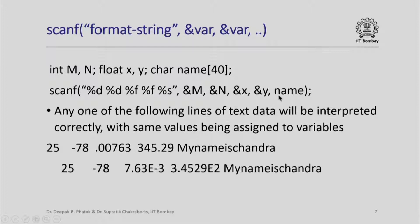It is very important to remember to use &m, &n, &x, and &y whenever we wish to get values for m, n, x, and y. Why have we not used &name? Well, name is actually a character string of 40 characters in an array, and the name of the array itself is a pointer. So we need not say &name. If I give input values in any one of these forms — for example: 25, two blanks, maybe -78, one blank, 0.00763, one blank, 345, 0.29, one blank, and my name is Chandan — you can see easily what values are intended for these variables.